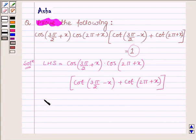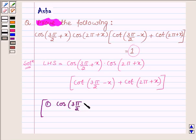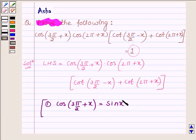First, let us learn some simple identities. First is cos(3π/2 + x) = sin x. Since this angle lies in the 4th quadrant and in the 4th quadrant cos is a positive function, we have sin x. Since if we have cos(nπ/2 + x) where n is an odd number, then cos changes to sin.